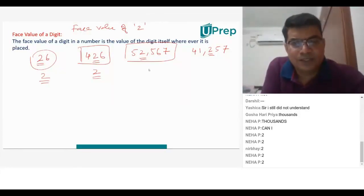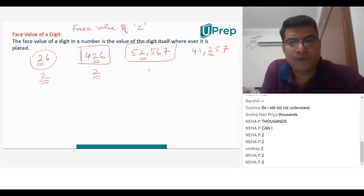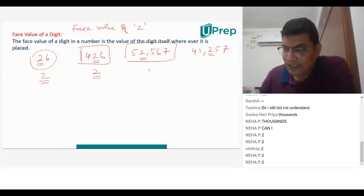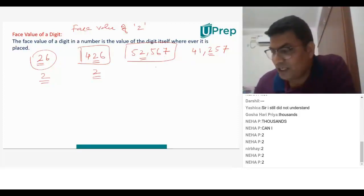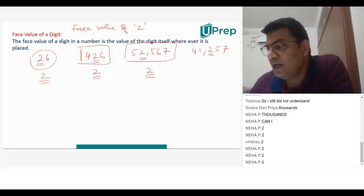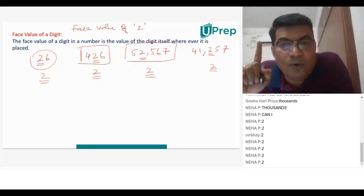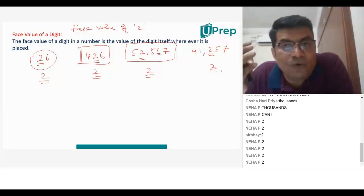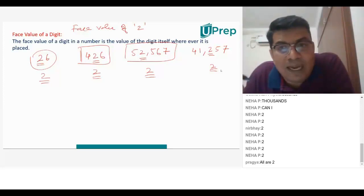In fifty-two thousand five hundred and sixty-seven, what is the face value of 2? It will still remain 2. In forty-one thousand two hundred and fifty-seven, what is the face value of 2? It will still remain as 2. So face value is nothing but the value of the digit itself.